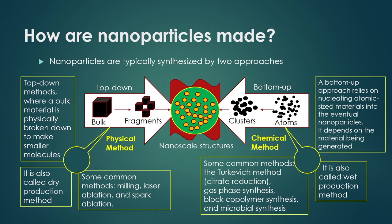There are different types of mechanical devices for size reduction. One of them is called milling — you can use the milling process to reduce particle size from conventional size down to micro and nano scale. Ball mills can reduce particle size to nano scale. Other methods include chemical vapor deposition, laser ablation, and spark ablation — these are all physical methods, also named the dry production method.